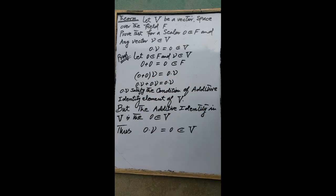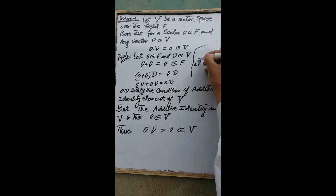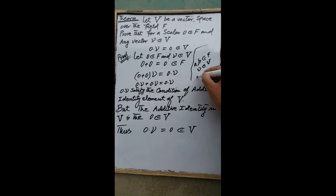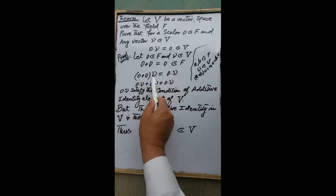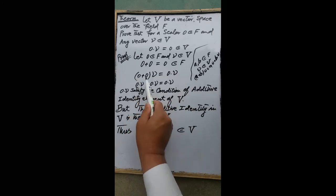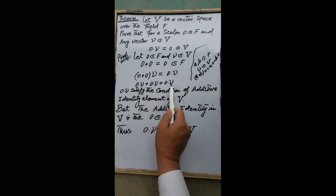By the scalar multiplication property: if a and b are any two scalars and v is a vector, then (a + b) multiplied by v equals a·v plus b·v. Therefore by this condition, 0·v plus 0·v is equal to 0·v.